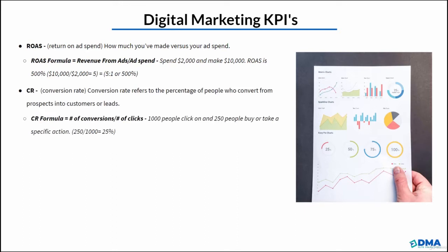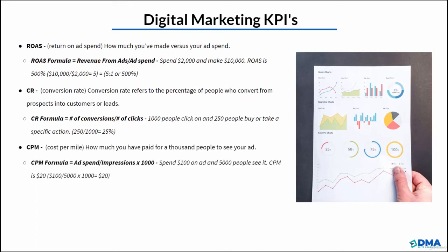Then we have CR, the conversion rate. The conversion rate refers to the percentage of people who convert from prospects into actual customers or leads. The formula is number of conversions divided by number of clicks. For example, 250 people buy a product or fill out their information out of 1,000 people who clicked on the ad, giving us a 25% conversion rate.